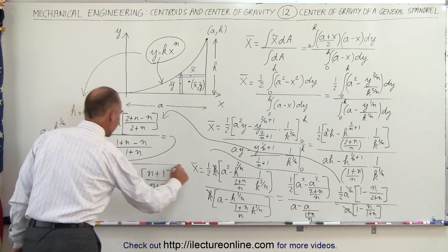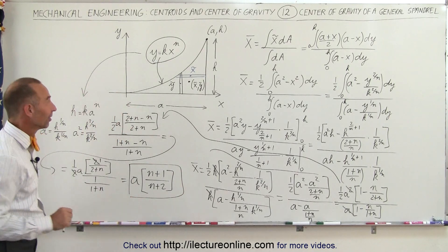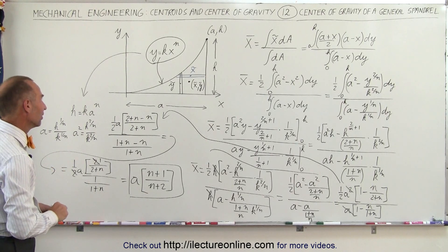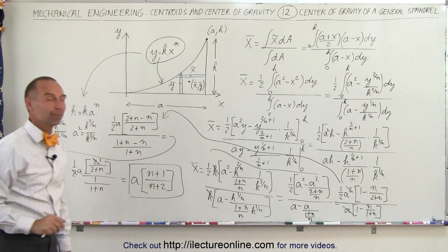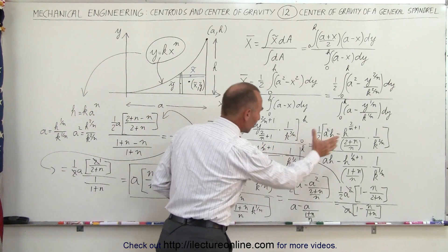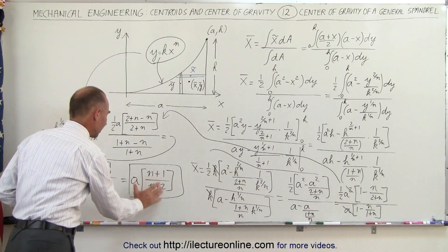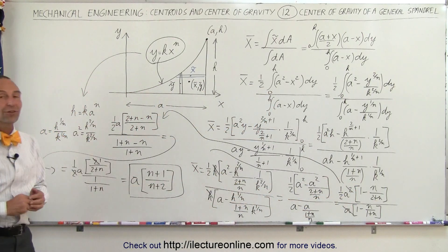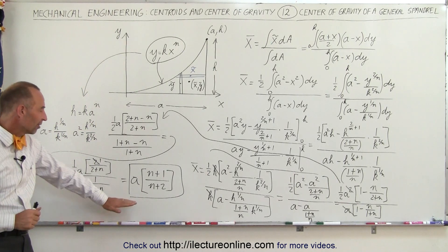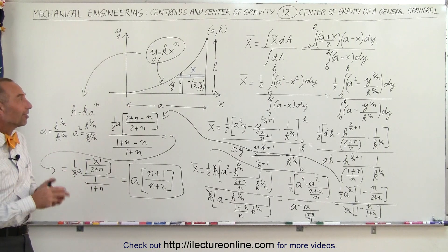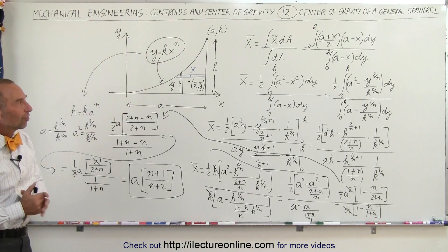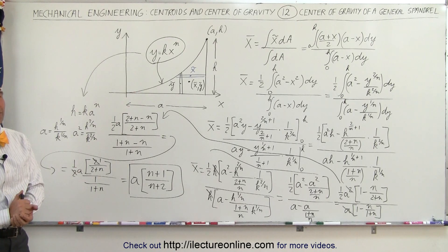And that is indeed the x-coordinate of the center of mass of the general spandrel with the equation y equals kx to the n power. That's quite a result — it's mostly algebra once we have the integral done, reducing all that mess to the final answer. Now that we know this, we can apply it, and you'll see examples where we can take this result and find the center of mass of some very odd-shaped objects, including shapes like the general spandrel. And that's how it's done.